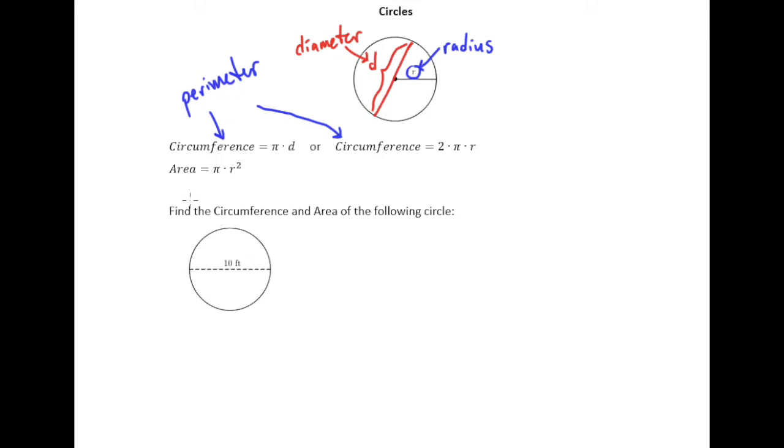So for circumference we have two possible formulas. We have this symbol here which is called pi. You can either take pi times the diameter or you can take two times pi times the radius. So you have the option and the way you'll decide which one to use is based upon whether you're told the radius of the circle or you're told the diameter.